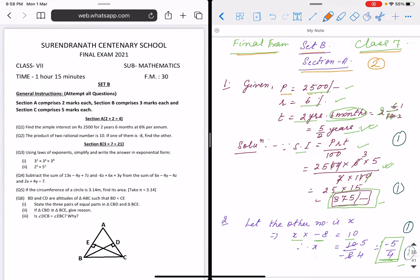First question: P is 2500, R is 6%, and time is 2 years 6 months. We convert 2 years 6 months into years: 2 + 6/12, which cancels to 5/2 years. So SI formula is PRT/100. P is 2500, R is 6, T is 5/2. After canceling, we get 375 rupees. We write the unit and answer must be in a rectangular box.